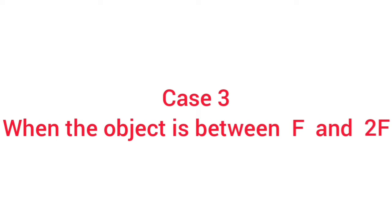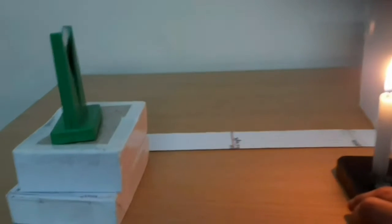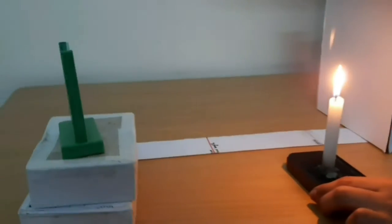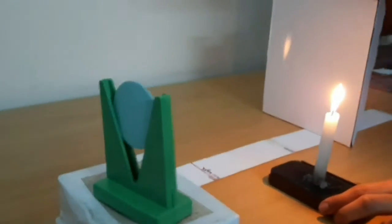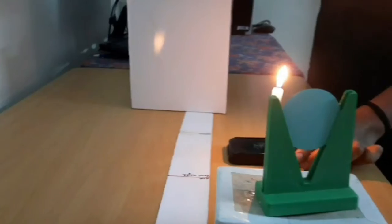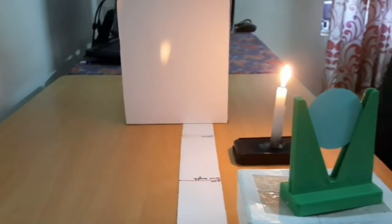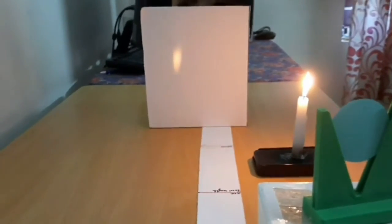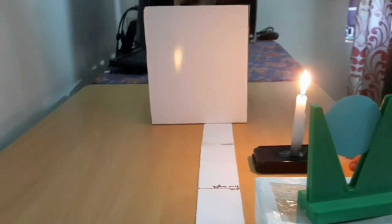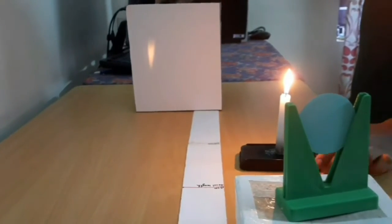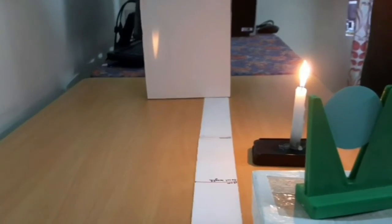In this case we will see the formation of image by the concave mirror when the object is between F and 2F. Place the candle in between F and 2F, here between 15 centimeters and 30 centimeters. Move the screen until you get the image of the candle flame. Here the image formed is real, inverted, and larger than the object.